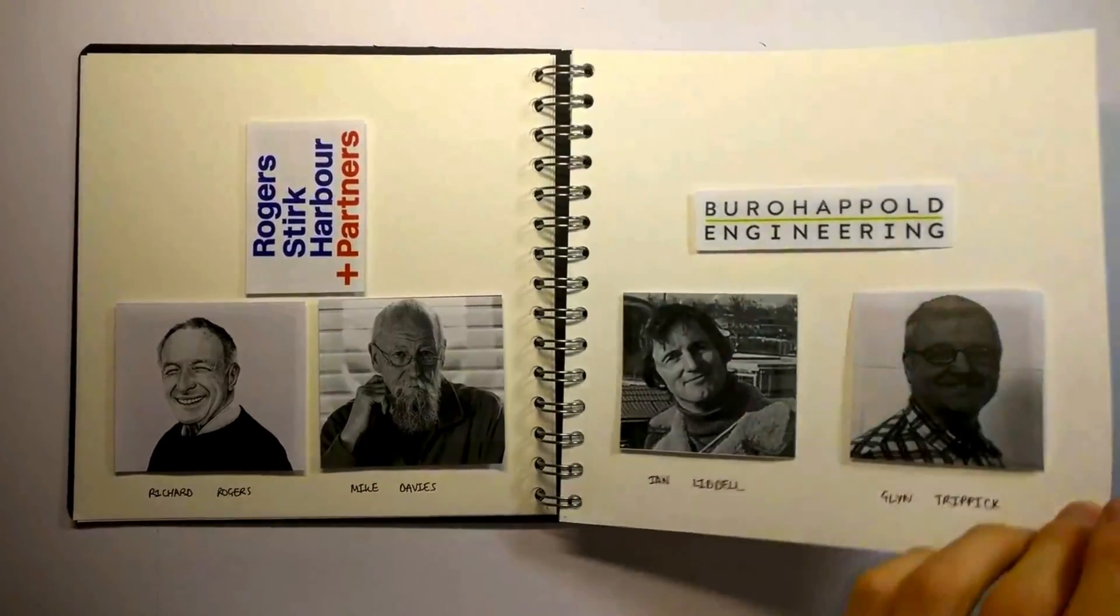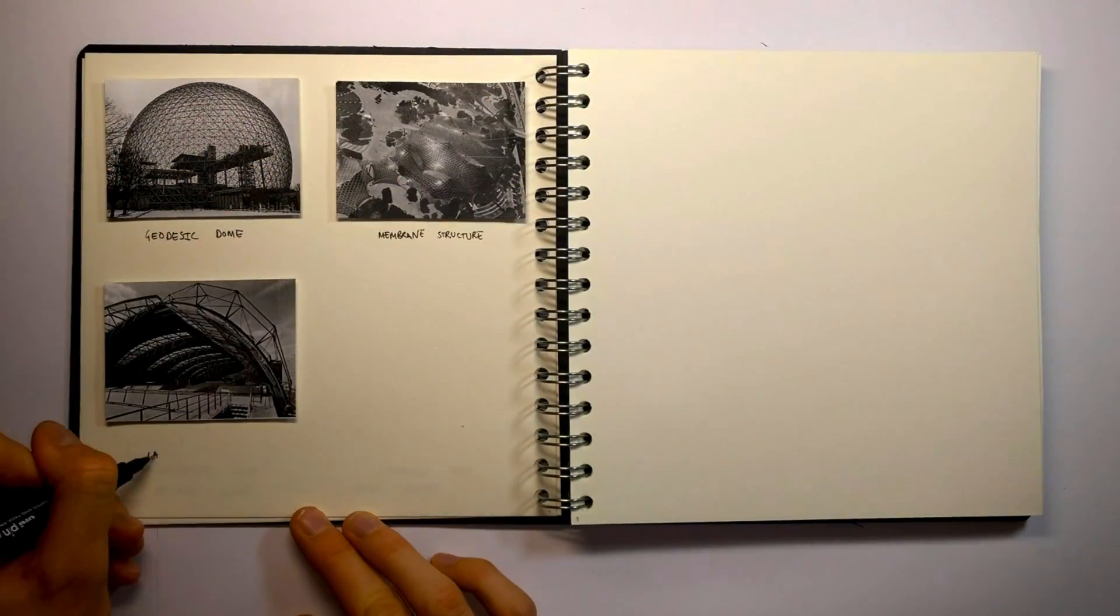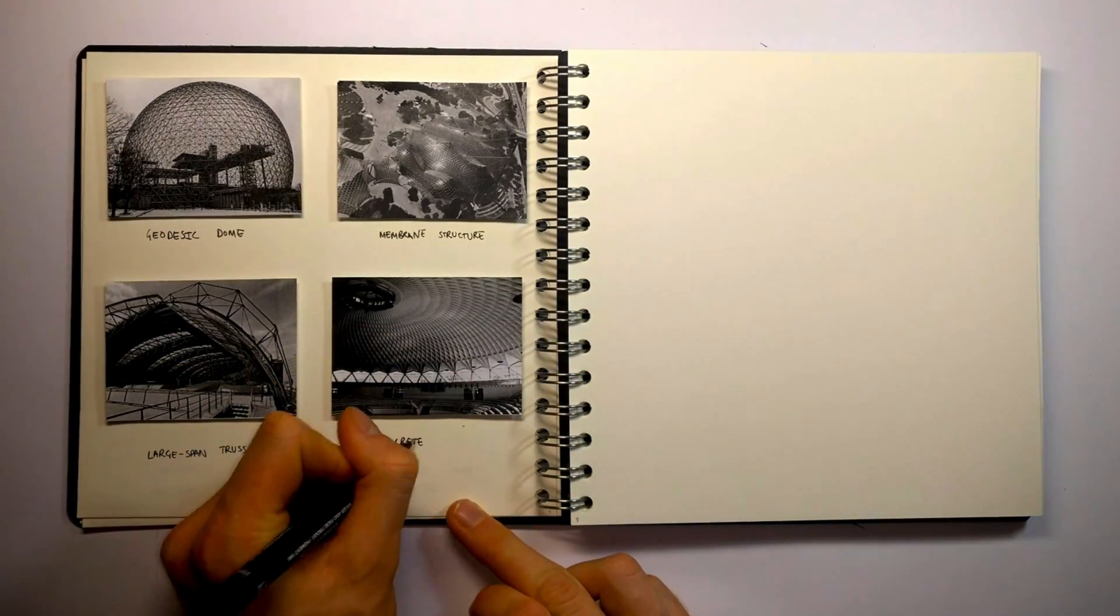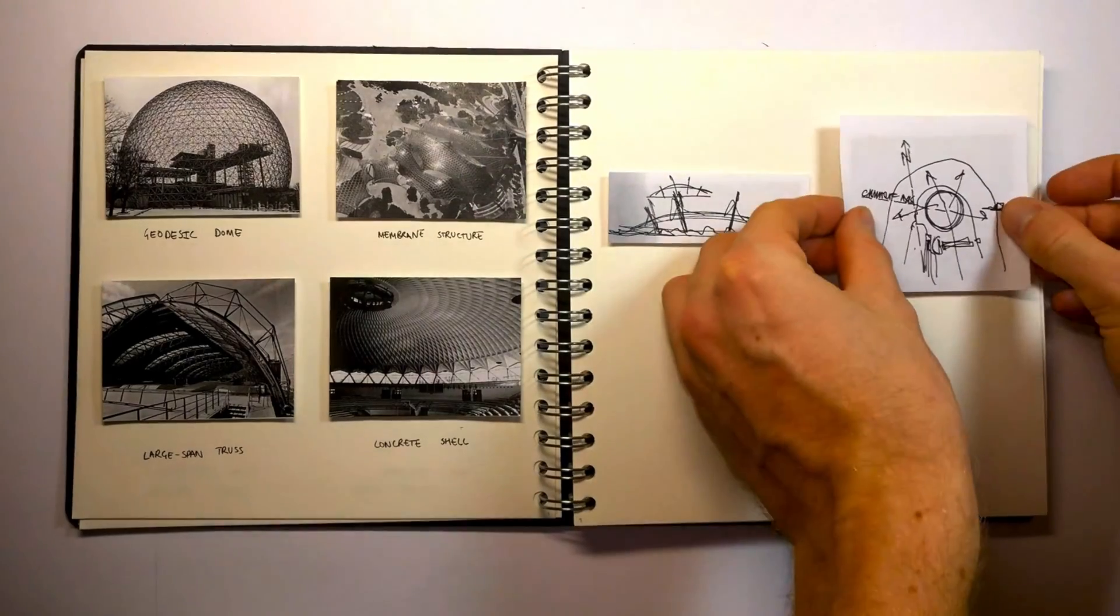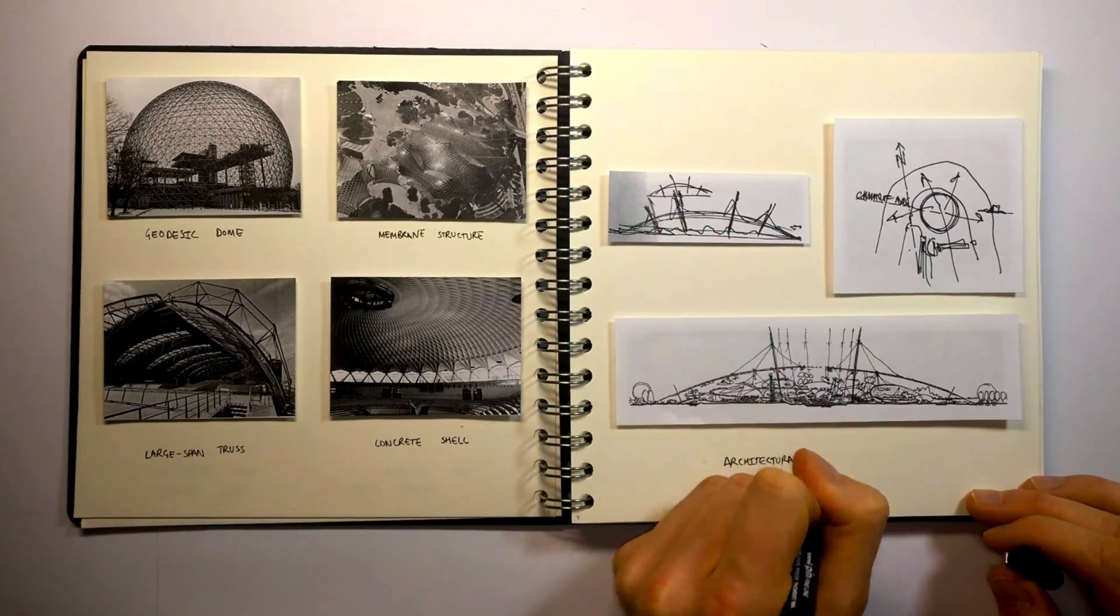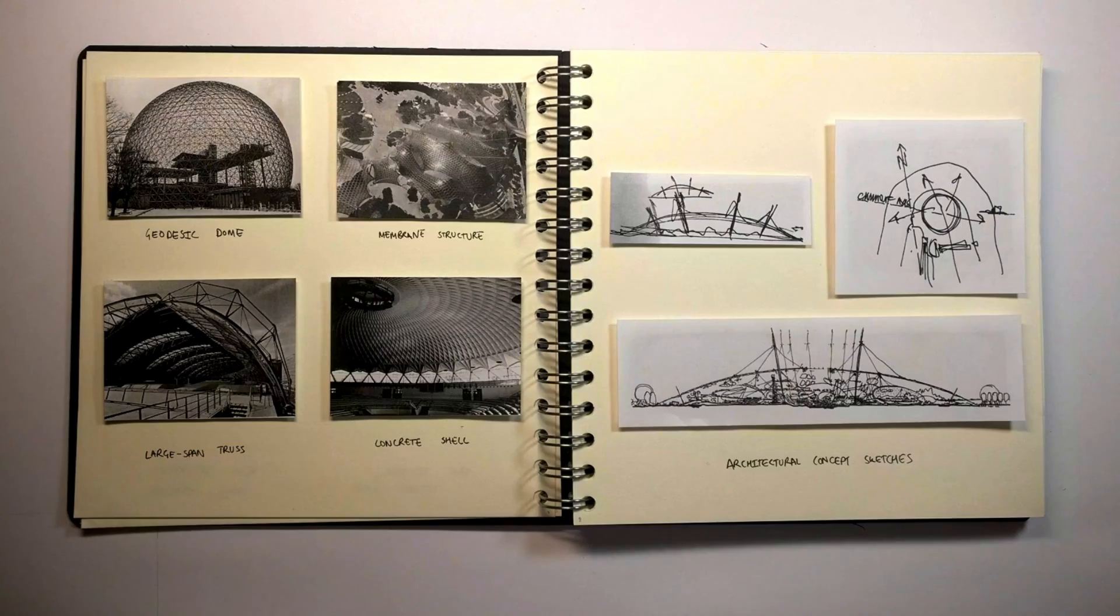After careful consideration of alternative options, such as a geodesic dome, membrane structure, large-span truss and concrete shell, Rogers and Bureau Hapold decided the most plausible solution was to produce an open-plan, tensile dome-shaped structure. This provided shelter whilst enabling construction to be under budget and on schedule.